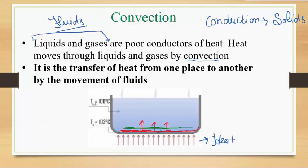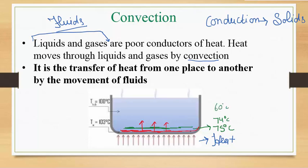In convection, heat is transferred from one place — from the bottom — to another by the movement of fluids. Similarly, this process takes place in gases as well. The lower portion gets heated first, then the upper portion. If the temperature at the bottom is 75 degrees Celsius, then higher up the temperature will be less — say 74 or 60 degrees Celsius — meaning as we move away from the heat contact portion, the temperature is decreasing. The highest temperature will be at the bottom part.